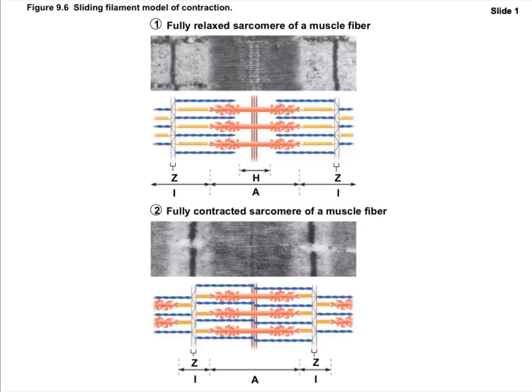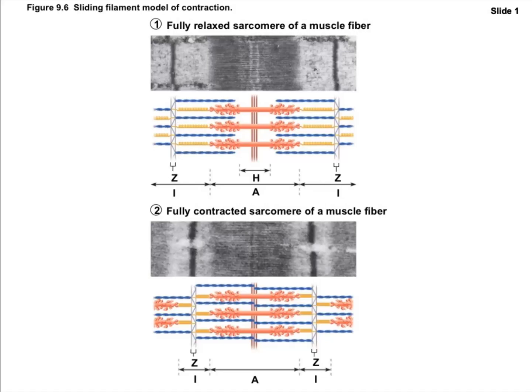A sarcomere is the space between two Z-discs. If you have 10,000 sarcomeres each contracting a few microns, you add all those up and get an entire muscle moving maybe a few inches. Moving a muscle is simply the sum of sarcomere contractions repeated over and over throughout the entire muscle.